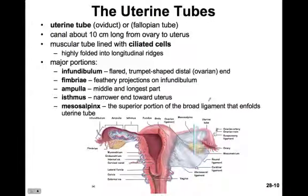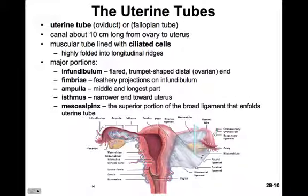The uterine tubes, otherwise known as the oviduct or fallopian tubes, are about 10 centimeters long and lead from the ovary to the uterus, though there is no direct contact between the oviduct and the ovary. It's a muscular tube lined with ciliated cells and highly folded longitudinal ridges. These ciliated cells act in two ways: the ciliated cells on the ridges beat towards the uterus, pulling the egg down the tube, while the ciliated cells in the ditches beat towards the ovary to aid sperm transport up the oviduct.